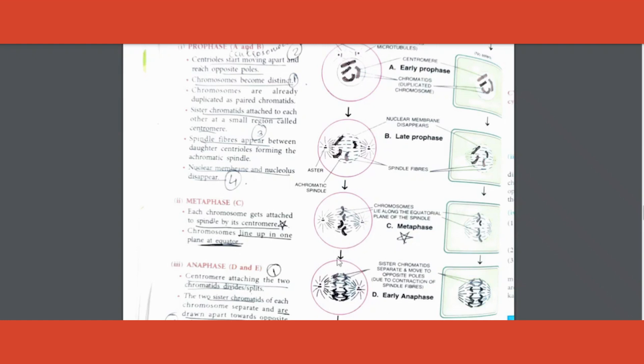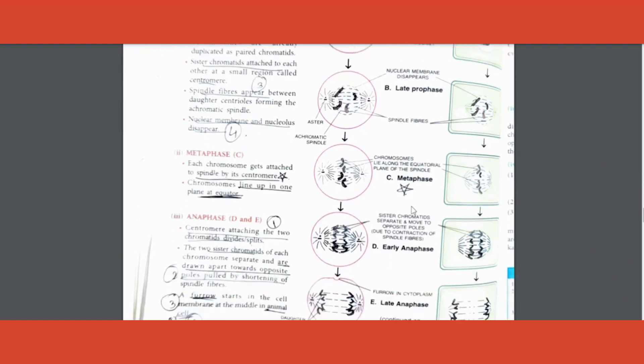Now here the type of question that used to come prior and you can expect also is they will give you one of these phases, let's say metaphase, and ask you to identify it. How do you identify? The moment you see all of them in a single plane, if you draw a line and they are all there, some of them slightly moved towards either sides, however if you see all of them almost in a single line, that means it is metaphase.